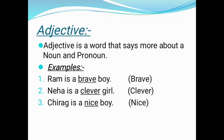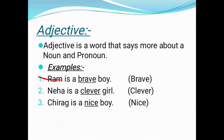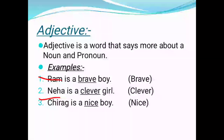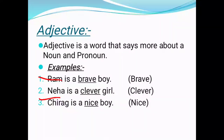Moving towards the next sentence: 'Neha is a clever girl.' In this sentence, 'clever' is our adjective because it is showing us how Neha is — so Neha is our noun. In the sentence 'Chirag is a nice boy,' 'nice' is our adjective because it is telling us the quality of the noun. Chirag is our noun.